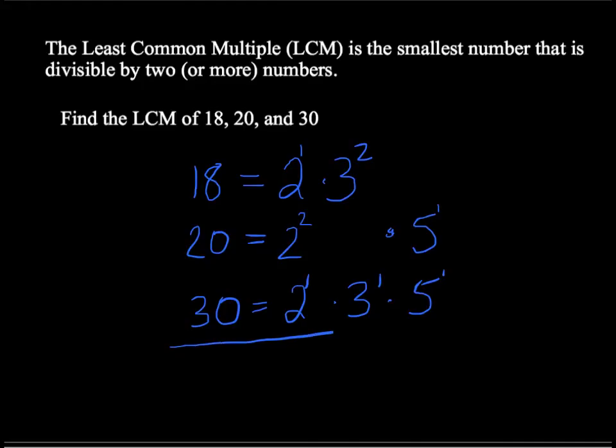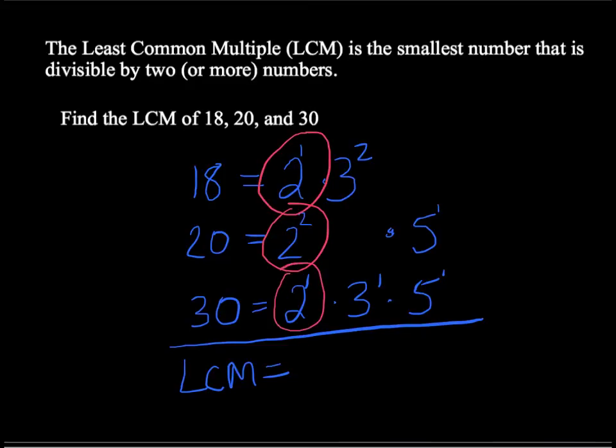Here's how you find the LCM using prime factorization. The least common multiple is going to have to be a number that is divisible by all three of these numbers. If it's divisible by 20, it must be, for example, divisible by 2 squared. If it's divisible by 18, it must be divisible by 2 to the power of 1. And if it's divisible by 30, it must be divisible by 2 to the power of 1 as well.